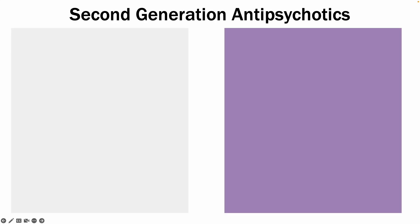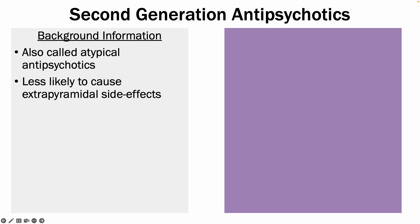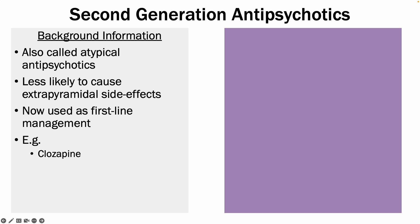The second-generation antipsychotics are also called atypical antipsychotics, and they are less likely to cause extrapyramidal side effects due to their mechanism of action. They are now often used as the first line in management of psychosis, and their examples include clozapine, quetiapine, and aripiprazole.